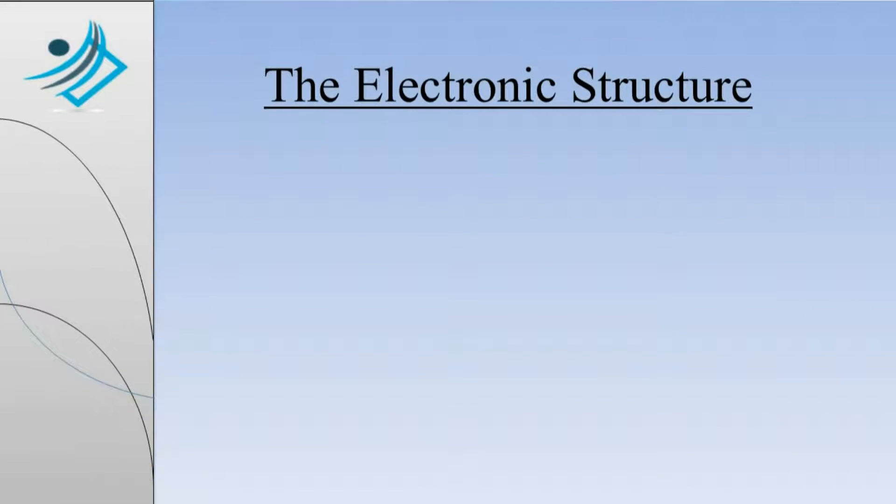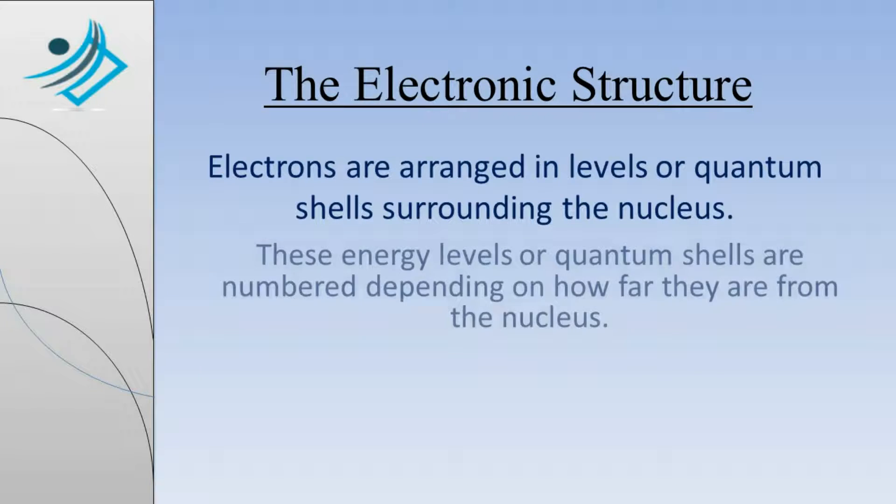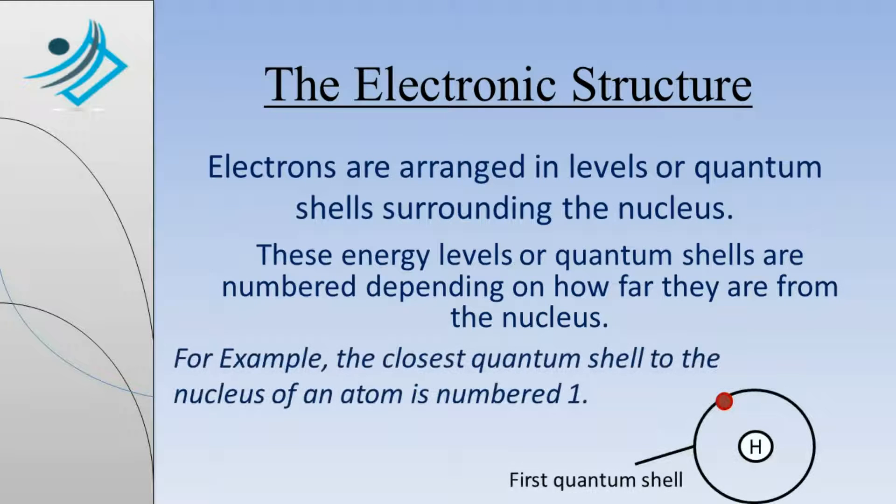The Electronic Structure. Electrons are arranged in levels or quantum shells surrounding the nucleus. These energy levels or quantum shells are numbered depending on how far they are from the nucleus. For example, the closest quantum shell to the nucleus of an atom is numbered 1.